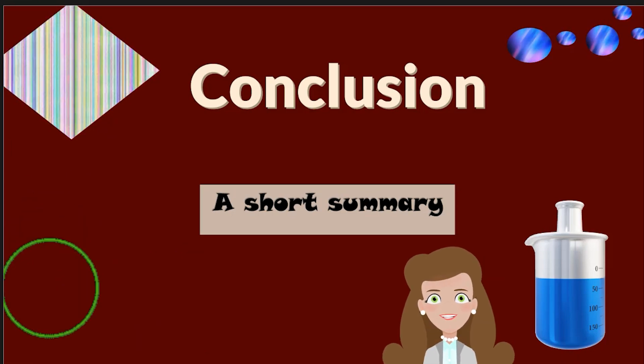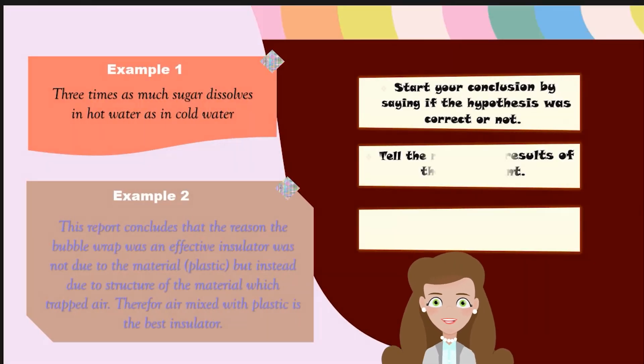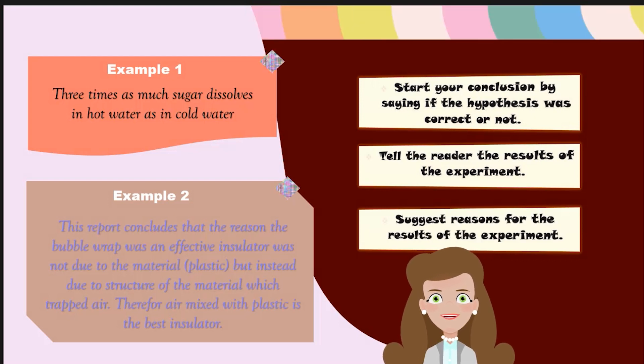The last section on the science report will be my conclusion, which is a short summary. To start your conclusion, say if the hypothesis was correct or not. You can tell the reader the results of the experiment and suggest any reasons for the results of the experiment. So for example, three times as much sugar dissolves in hot water as in cold water. Or you can give a more detailed conclusion. This report concludes that the reason the bubble wrap was an effective insulator was not due to the material but instead due to the structure of the material which trapped air. Therefore, air mixed with plastic is the best insulator. Conclusion is a summary of the entire experiment.